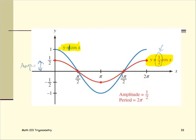The period is the length from the right end to the left end. The right end is two pi and the left end is zero, so the whole period is two pi.